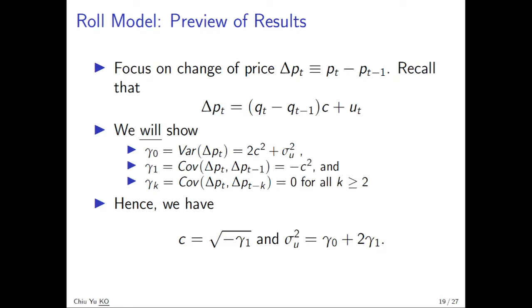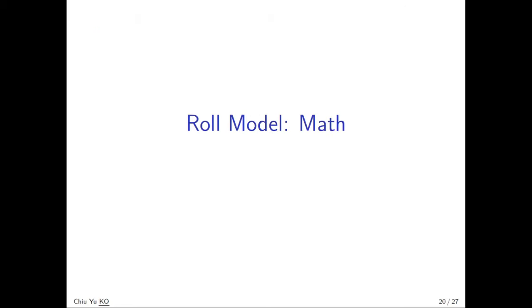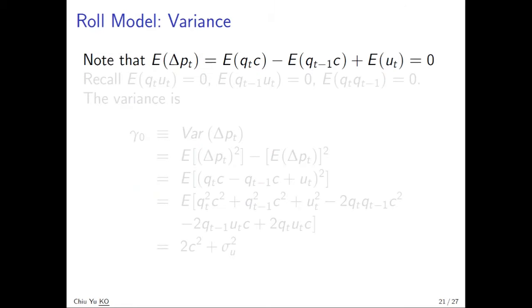Now we are ready to show you the math. So we call that the change in price. The expected value will be equal to expected value of all its terms: expected Q_t times C minus expected Q_{t-1} times C plus expected u_t. In the first term, because C is constant and Q_t is mean zero, so this first item is zero. Similarly the second term, and u_t is a mean zero IID, so expected value of the price change is zero.